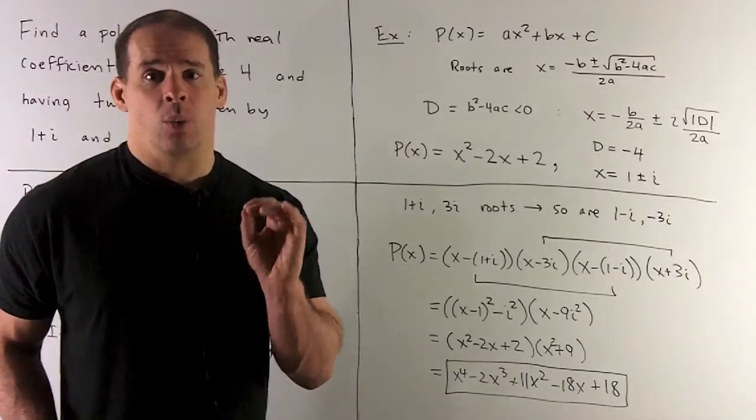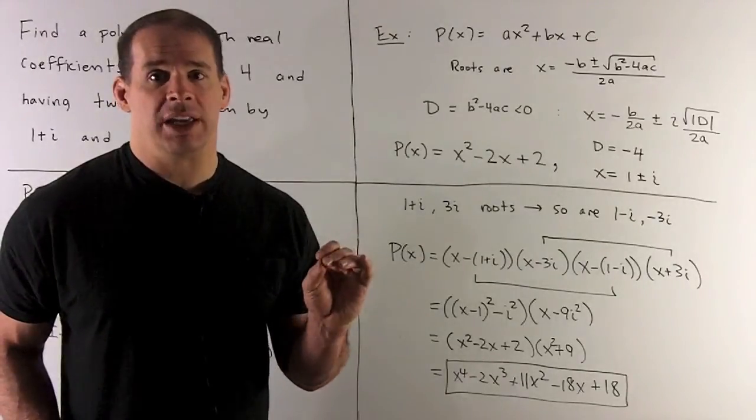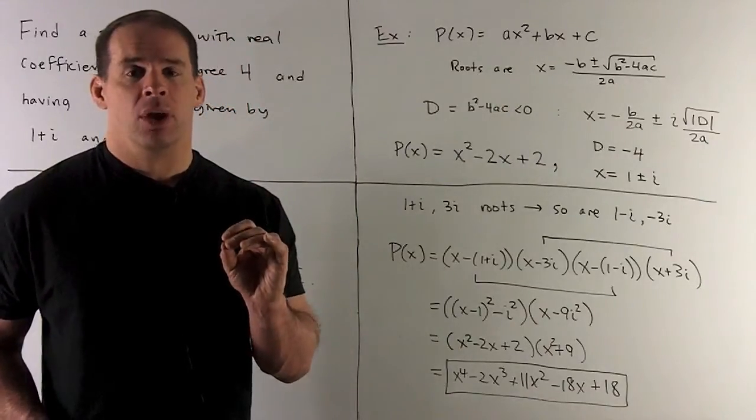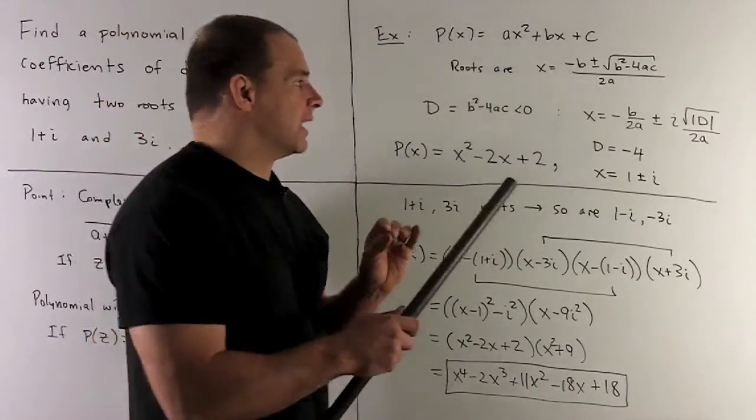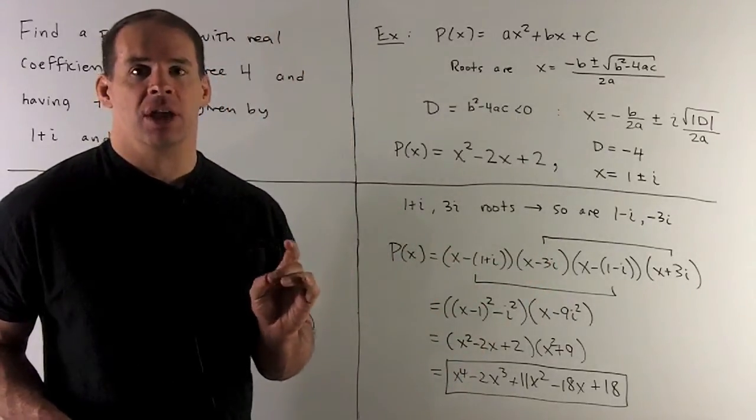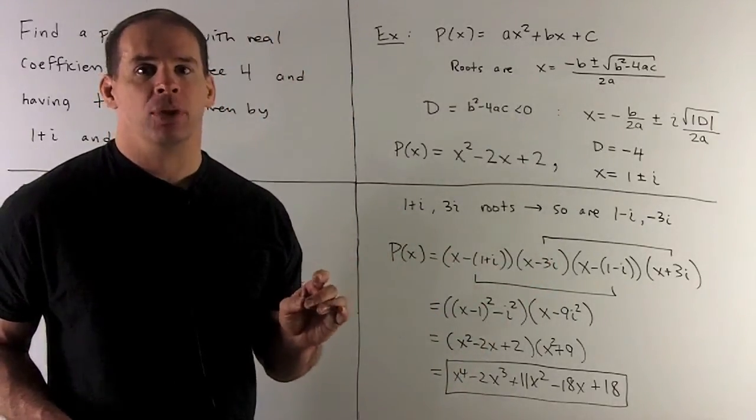This gets interesting when b squared minus 4ac is negative. In that case, let's call it d. Then the roots will be minus b over 2a plus minus i times square root of the absolute value of d over 2a.